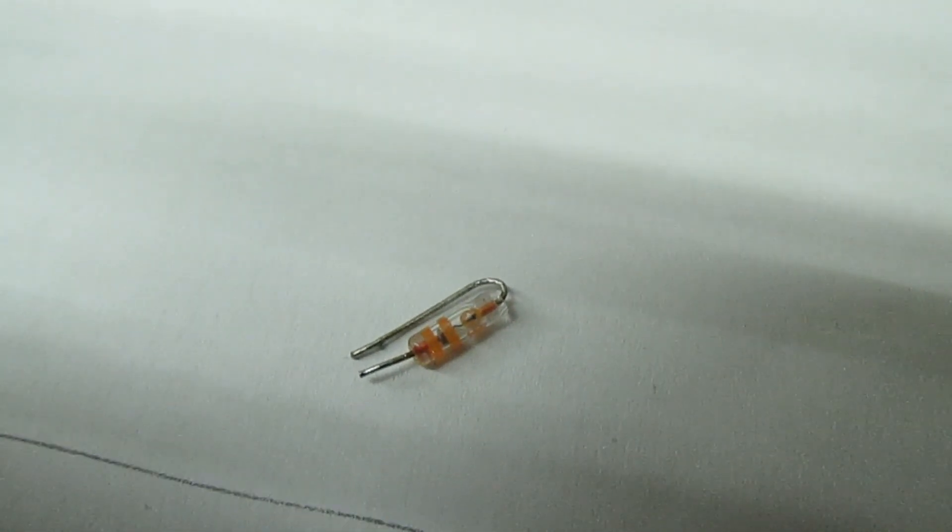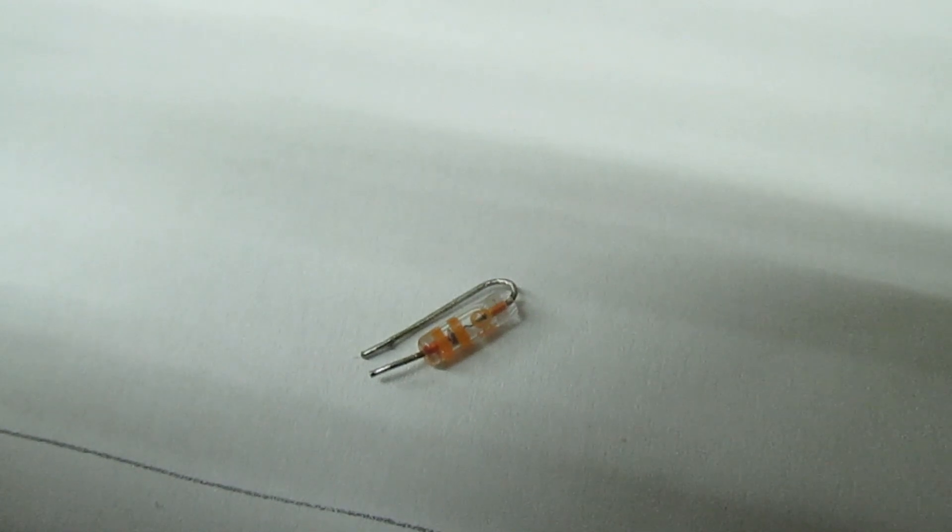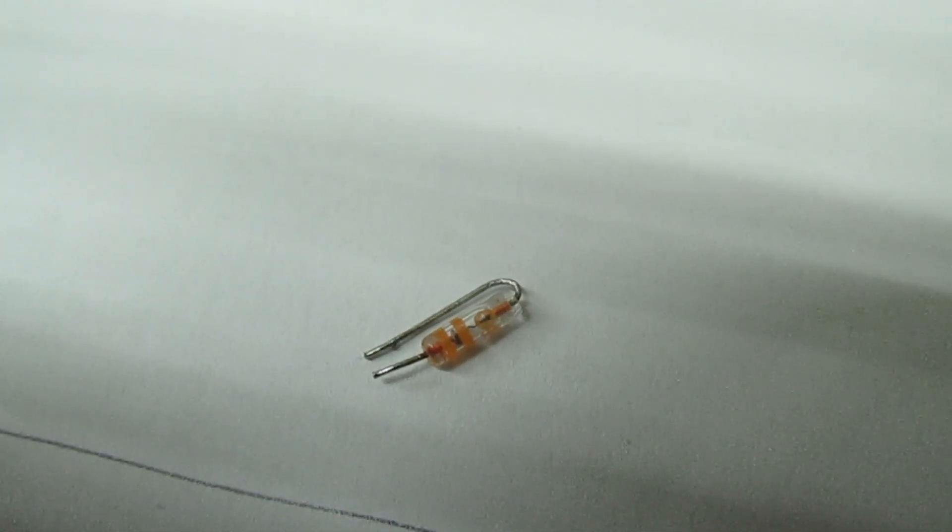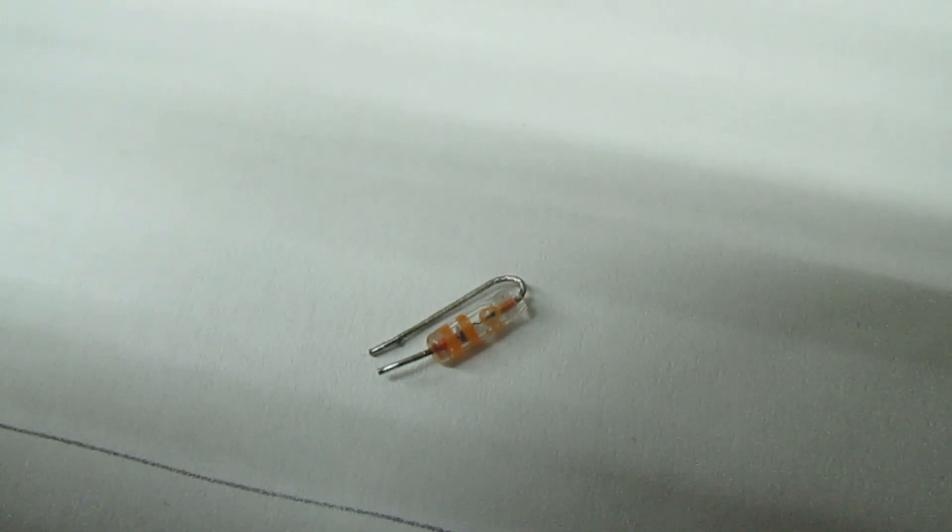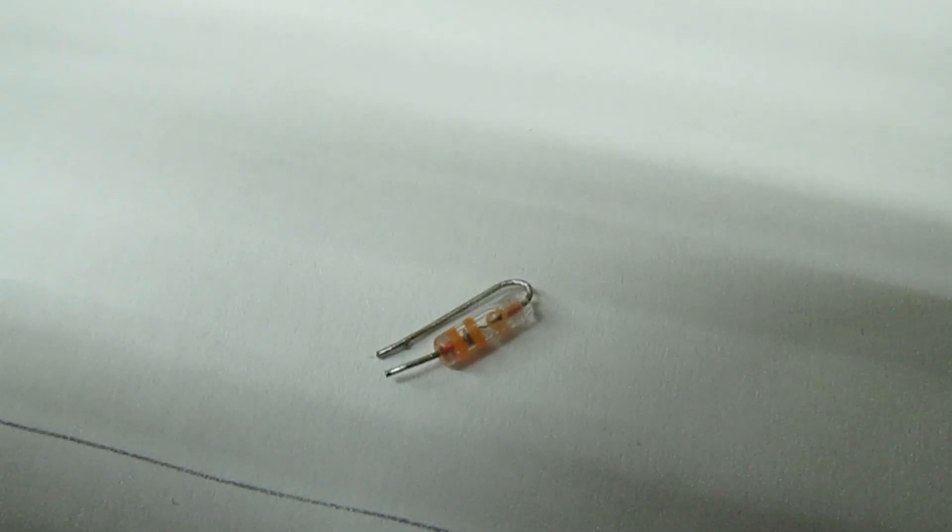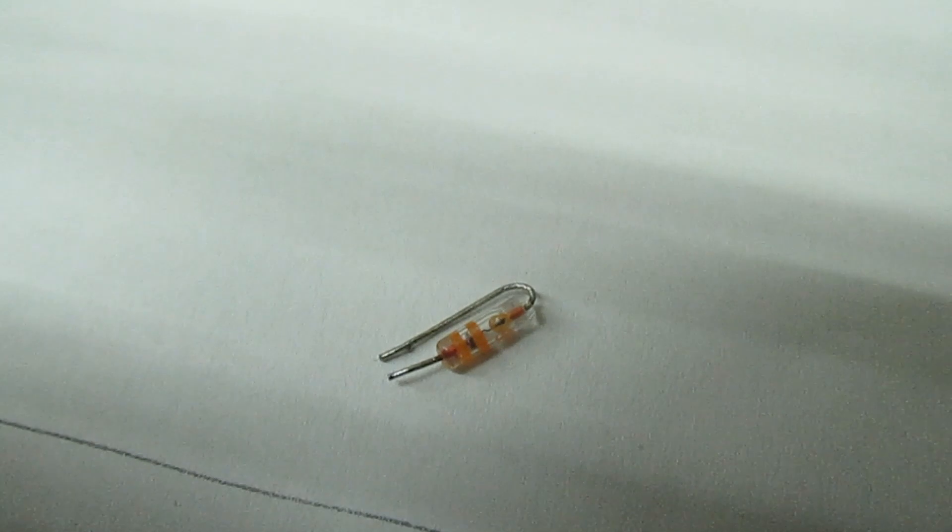I do have the part number of this diode but I can't find one. So what I've done is I've looked on the circuit board for another diode that's just like it, got the same number on the side. I've taken that out and measured it. It's a silicon diode but it has an unusual high forward resistance of about 50 ohms.